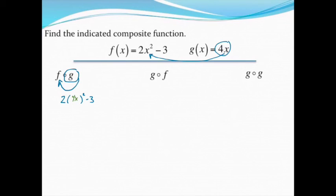From there, I just do some simplifying. Let's do exponents first. 4x times 4x is 16x squared, so this becomes 2 times 16x squared, and then minus 3.